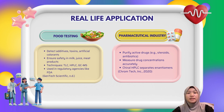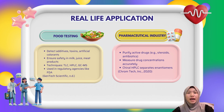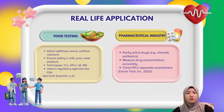It helps detect harmful additives, toxins, and artificial colorants in foods. For example, it's used to check for contaminants in milk, juice, and dairy products. Techniques like TLC, HPLC, and GC-MS (gas chromatography-mass spectrometry) are commonly used. In fact, regulatory bodies like the FDA rely on chromatography to enforce food safety standards.